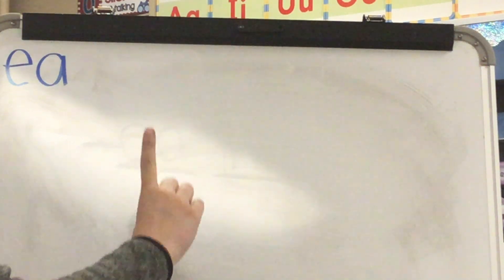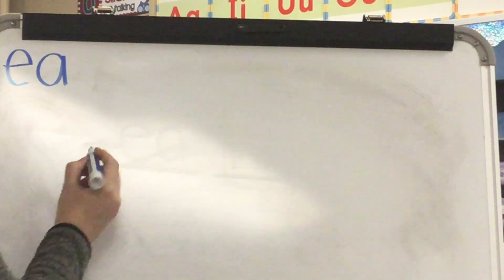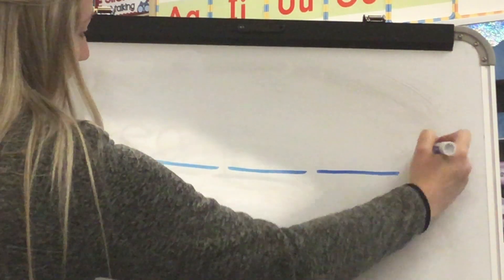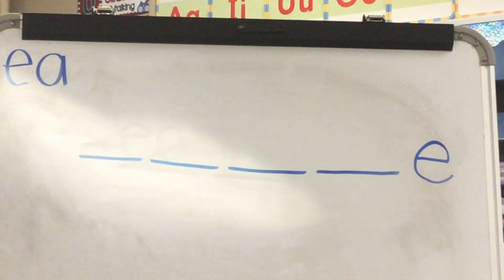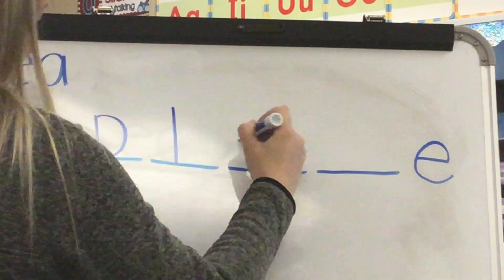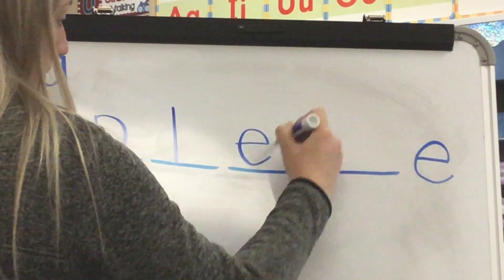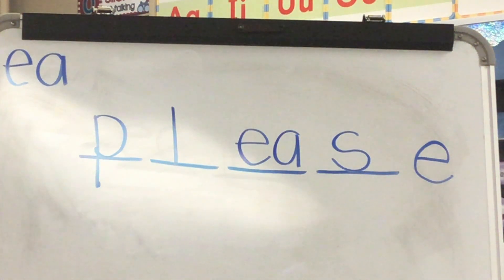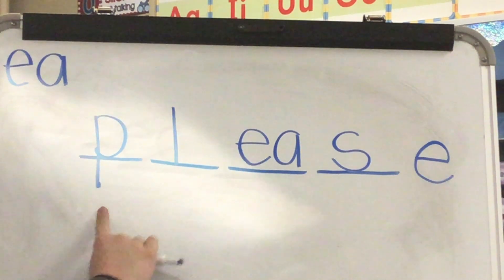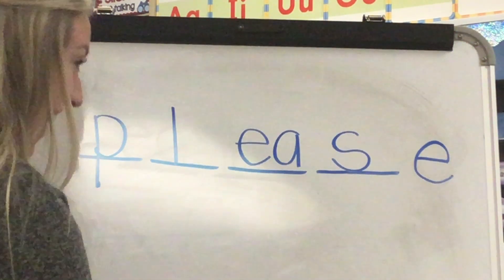Our next word is please. What word? Please. Stretch please: P-L-E-S. Please has a silent E at the end; you know the rest of those sounds. Write your sound spellings. Check. Spell please: P-L-E-A-S-E. Word? Please. Yes, please.